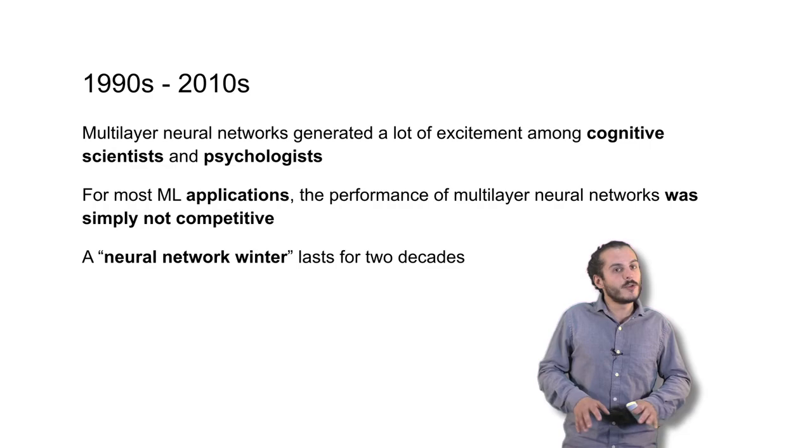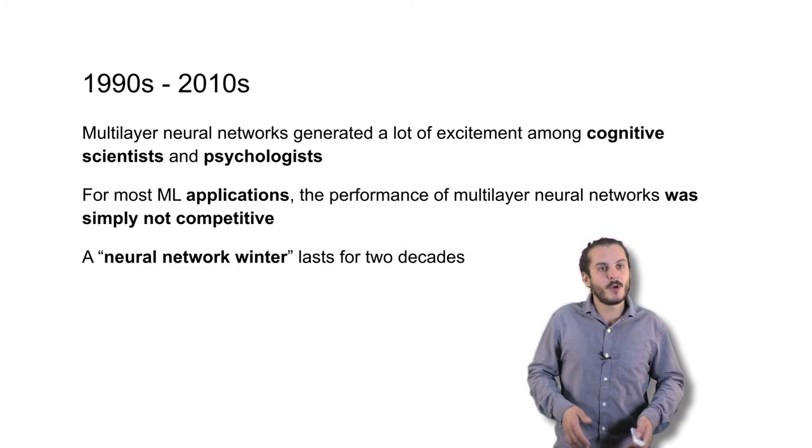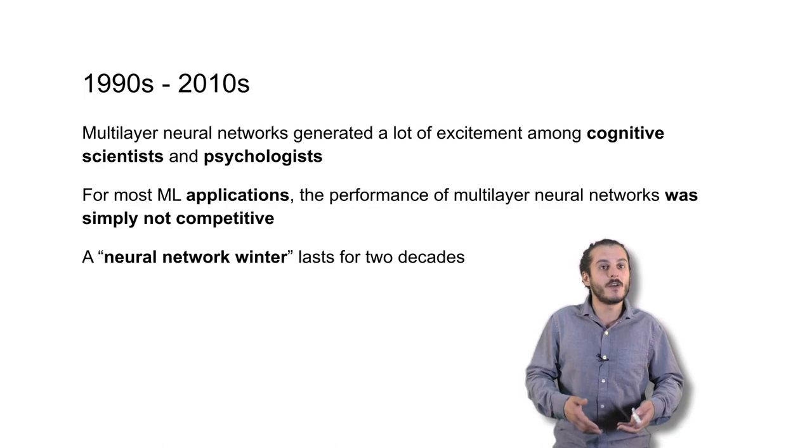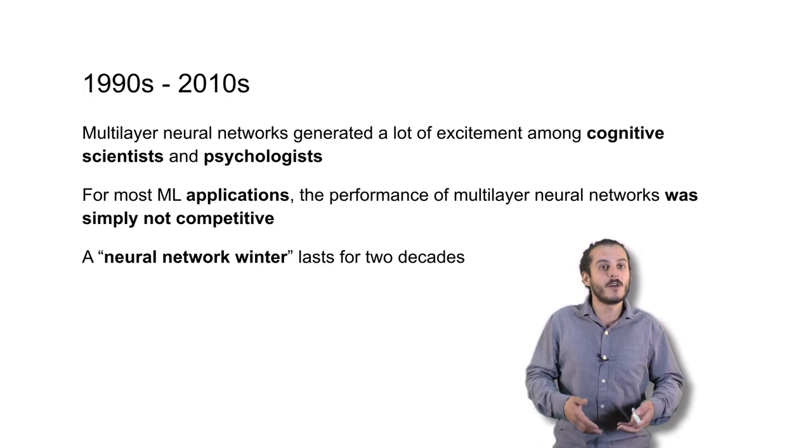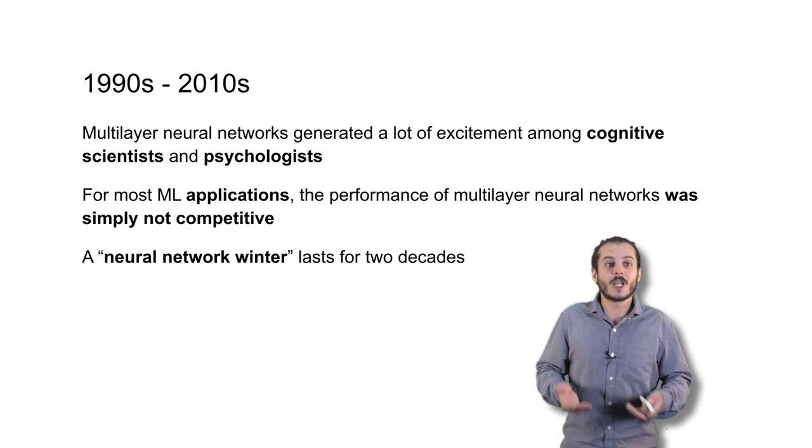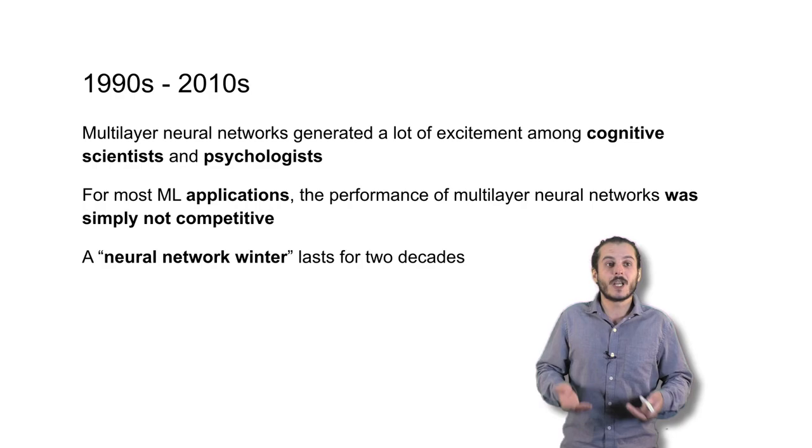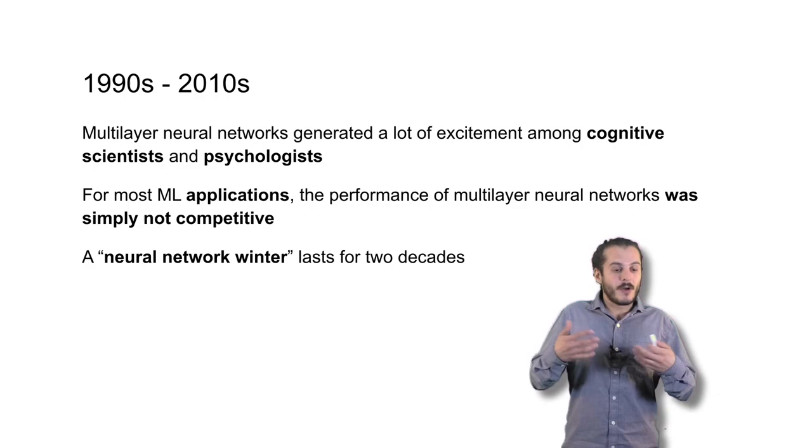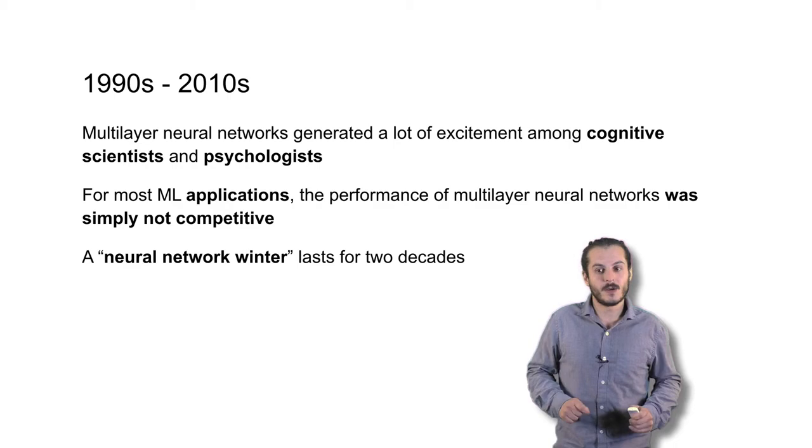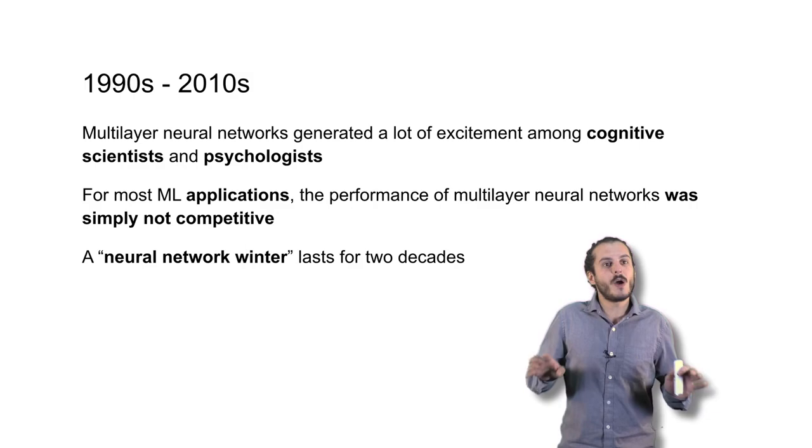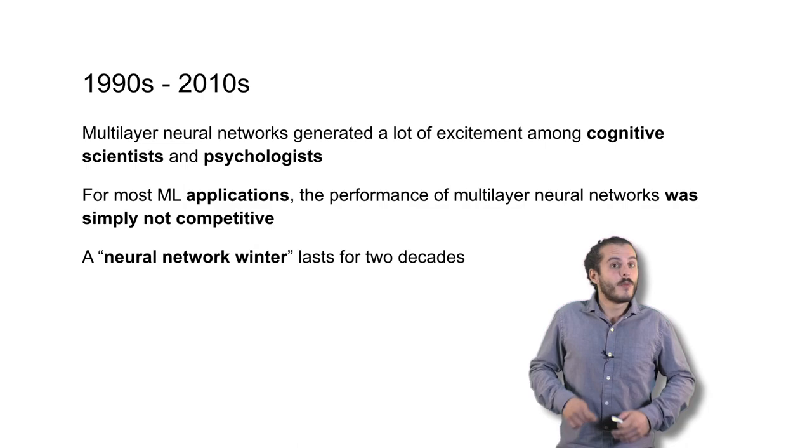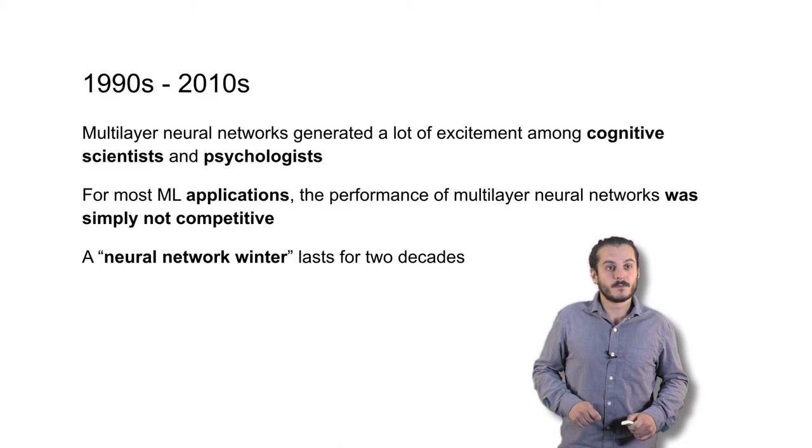Starting from the mid-80s and through 2010 or so, neural networks generated a lot of excitement among psychologists and cognitive scientists. They actually seemed to be quite good models of human perceptual performance and various kinds of behaviors that people do in psychological tasks. However, for actual machine learning applications, they just weren't very good. They weren't at the state of the art, and other algorithms tended to perform better than neural networks did at applied tasks like recognizing images and determining whether it's a cat or dog, for example. And because of this, there was a kind of winter of applied neural network research that lasted for almost two decades, or maybe even a little bit more, where people did not take neural networks very seriously as state of the art machine learning algorithms.